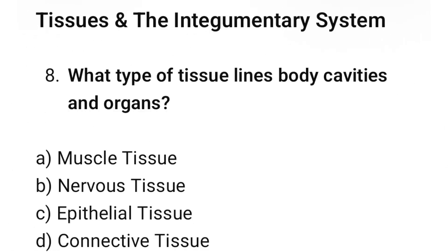Question number 8: What type of tissue lines body cavities and organs? The correct option is C. Epithelial tissue.